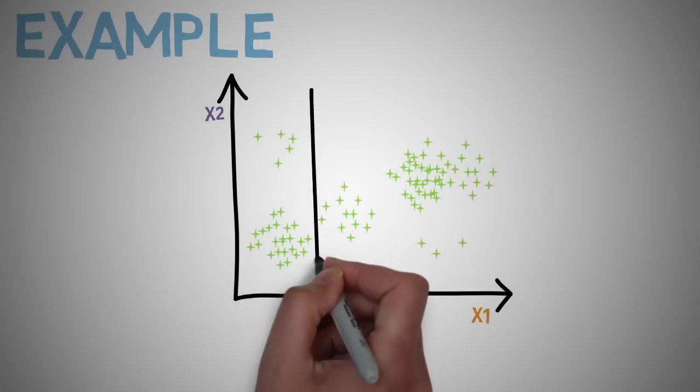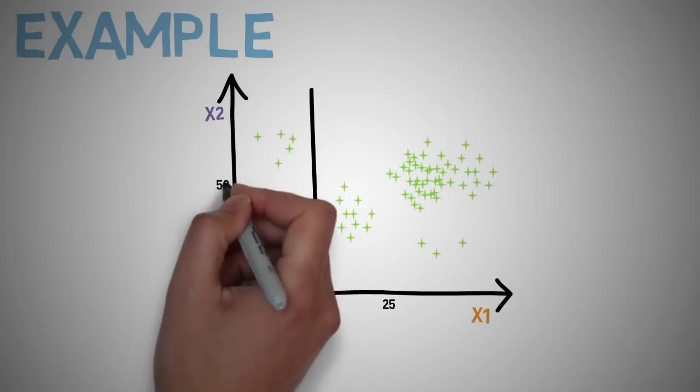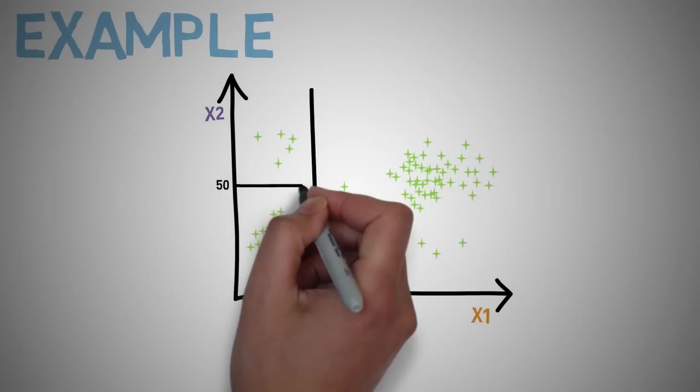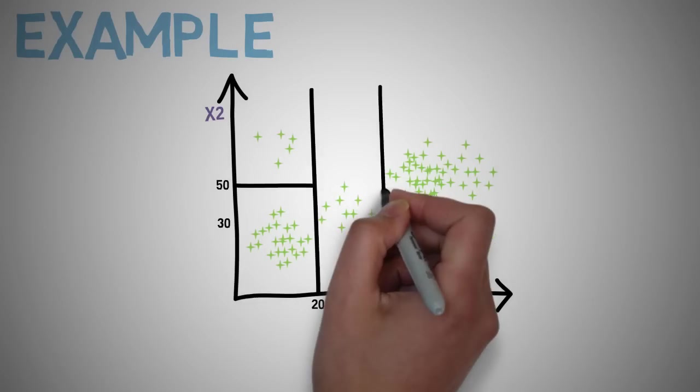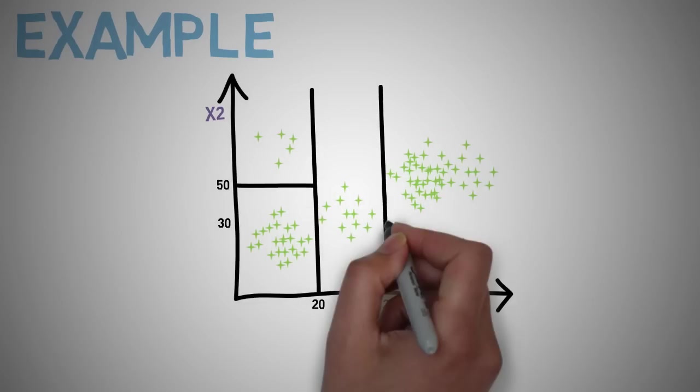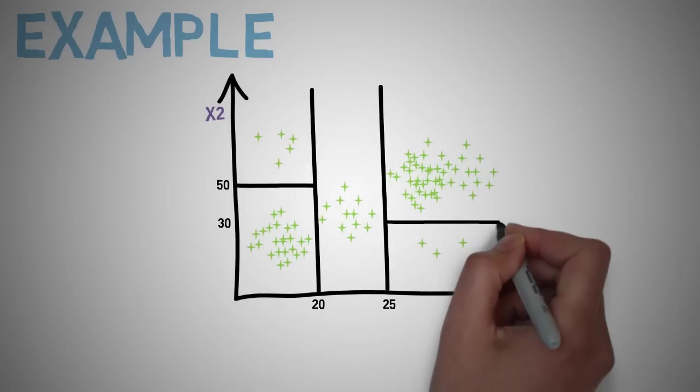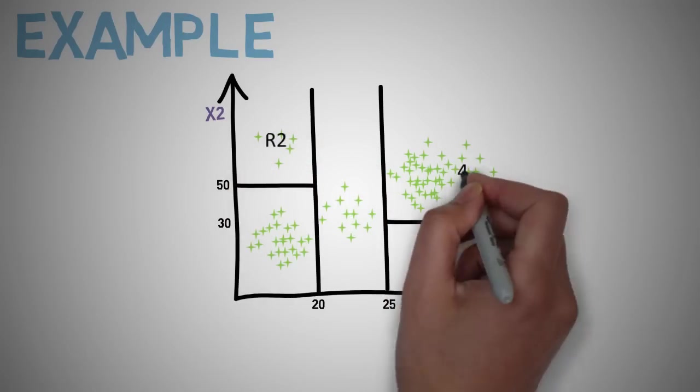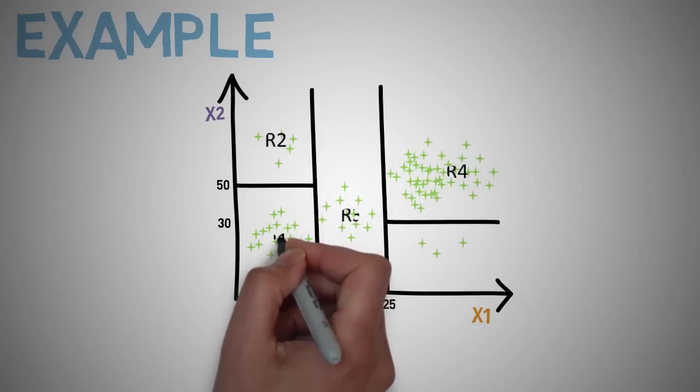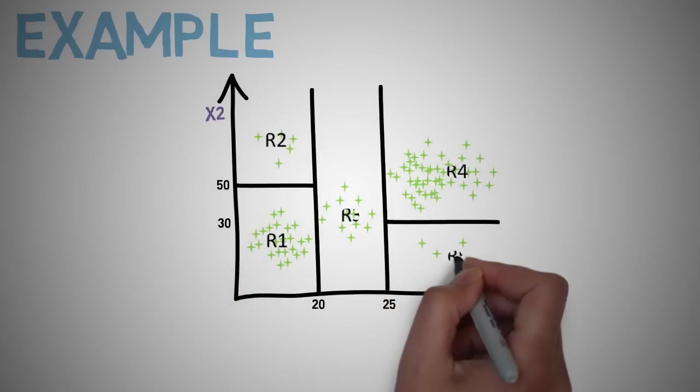If we have to look at this data, we can split it into five regions. We can draw a line here at x1 equals 20, as well as x2 equals 50, and then another one over here at x1 equals 25, and then a last split over here at x2 equals 30.